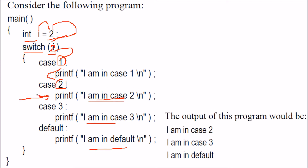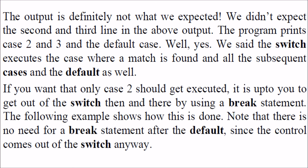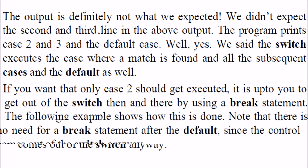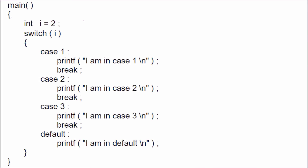We only want the matching case line to be printed. For that, if we want to come out of the switch when a case matches, we have to use a break. We will use break in order to come out of the innermost loop. This is how the program will look using break — we want just the matching line printed, others not to be printed.